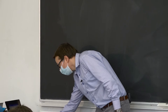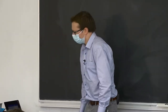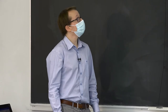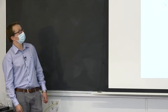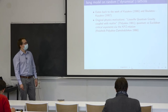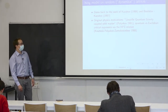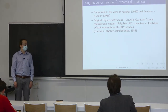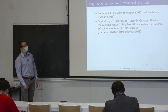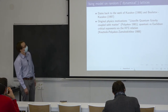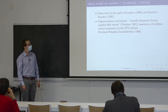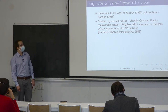That was all in the regular lattice case. On a random lattice — called a dynamical lattice in physics — the study dates back to work of Kazakov and Boulatov-Kazakov in the late 80s. The original physics motivation was to study Liouville quantum gravity coupled with matter fields. Liouville quantum gravity was introduced by Polyakov in 1981, and this is a discrete model of it with matter interaction.